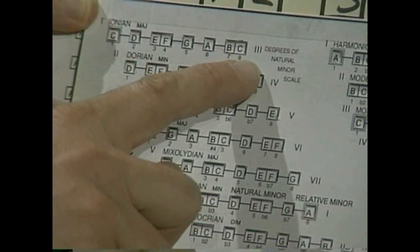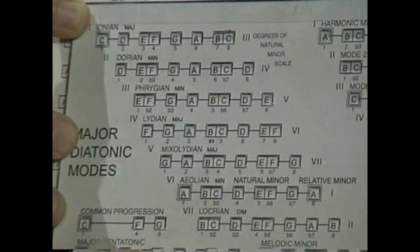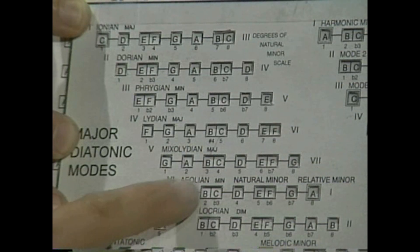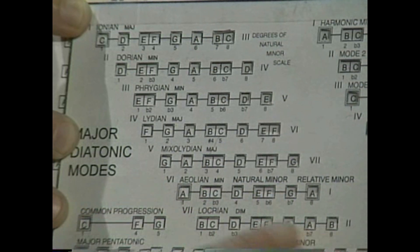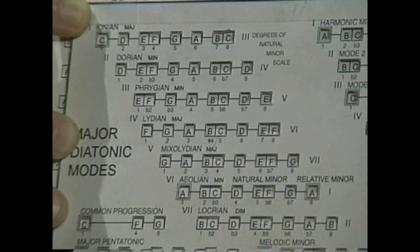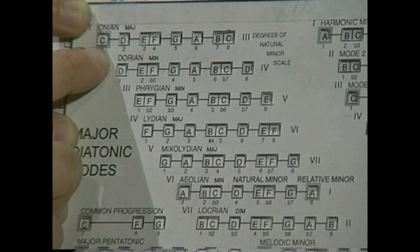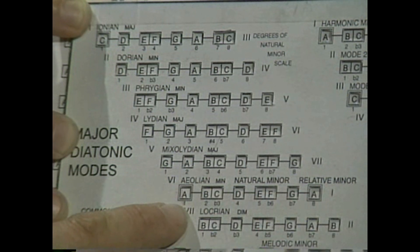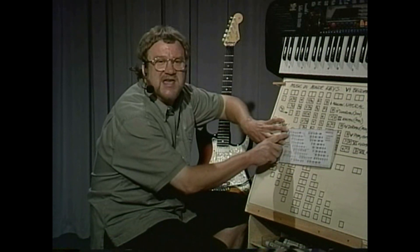If you're looking at your Ionian mode up here, in the key of C we know that the major scale is C, D, E, F, G, A, B, C — that's the one mode, that's Ionian. Now, take a look at mode number six — that's the Aeolian mode, also known as the natural minor. You will always be able to calculate your relative major-minor relationships with your slide rule by looking at what's in the Ionian window, which in this case is C, and what's in the Aeolian window. It even says over here: relative minor, which is A.